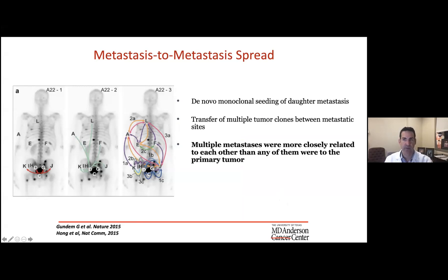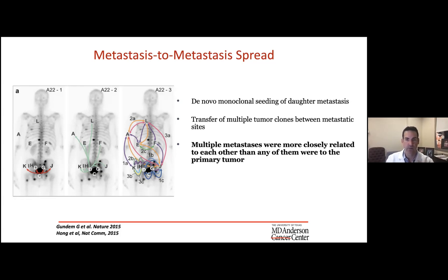There's some biologic basis to these concepts. An autopsy series of patients who died of prostate cancer analyzed metastatic sites and the clonality of tumors, finding that tumor clones travel between metastatic sites in addition to coming from the primary to metastatic sites — and metastases are actually more closely related to each other than to the primary. This raises the concept: can you disrupt this by treating the metastatic sites or even the primary, decreasing the shed of disease and its continued spread?